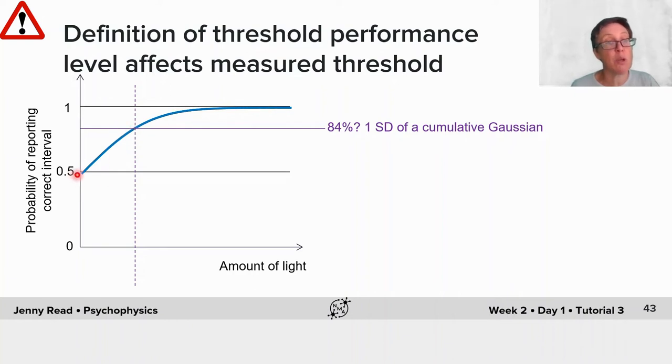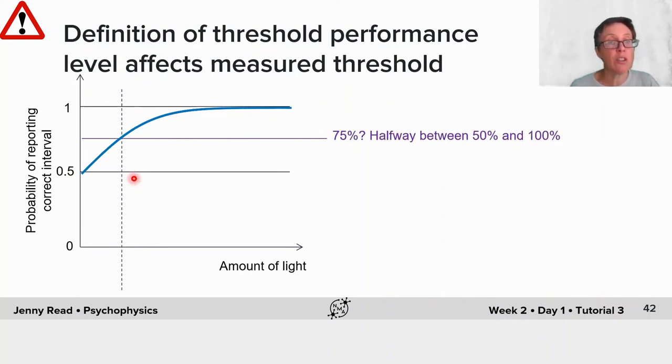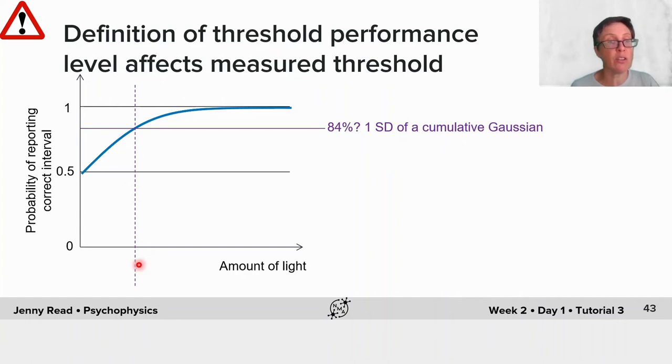Another common one is 84%, the rationale being that if this curve is a cumulative Gaussian, 84% represents a step of one standard deviation. It doesn't matter. Both are perfectly valid choices. But you can see that depending on which you choose, you're going to get a different measured threshold. That's something to bear in mind when you want to compare results from different studies.